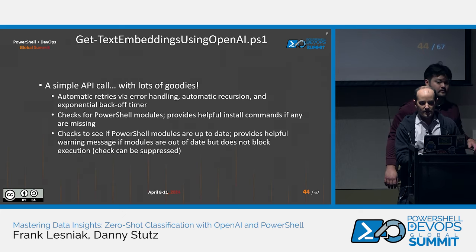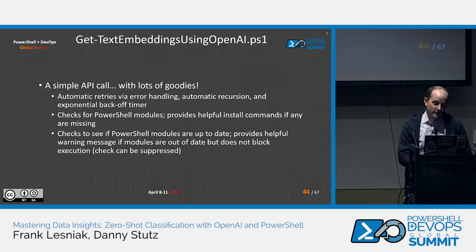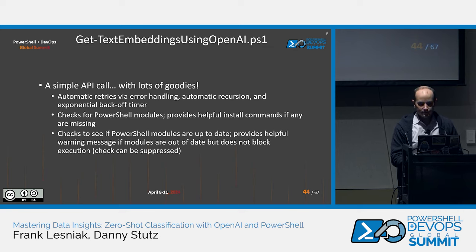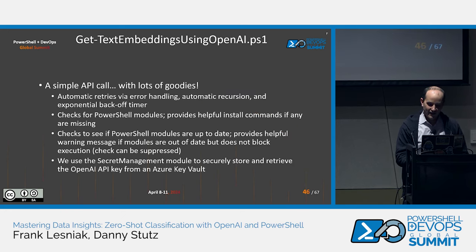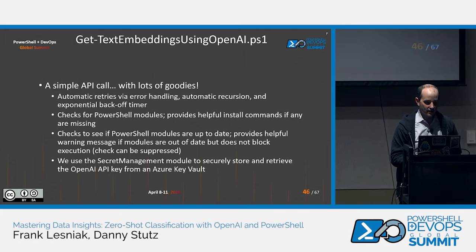A couple other goodies we built in: a check for missing PowerShell modules, and the script will provide a helpful installation command. I intend to provide this capability to our HR team, and I don't want to become their support resource, so I tried to make it as user friendly as I could. We're also checking to make sure modules are up to date. Portly PowerShell guy points out you don't need modules to call an API — that's true. However, we are also using the Secret Management module to securely store and retrieve the OpenAI API key from Azure Key Vault.